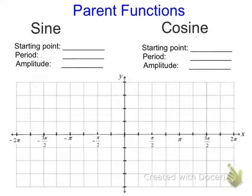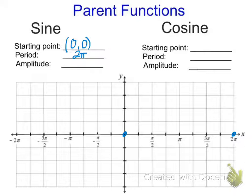So here are your notes — you should be adding this to your note sheet. The starting point for sine is at (0, 0), because if the angle is 0, the sine of the angle is also 0. Think about your unit circle to help you visualize that. The period of sine is 2π, because it repeats every time we go around the full circle.